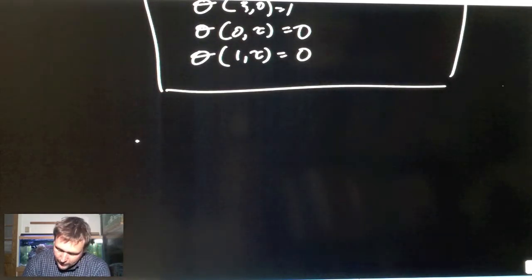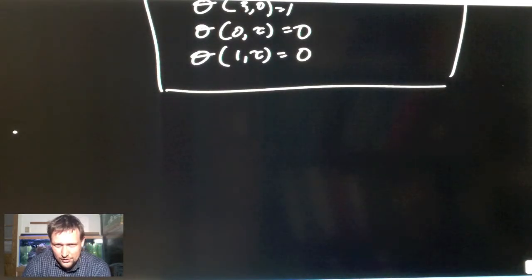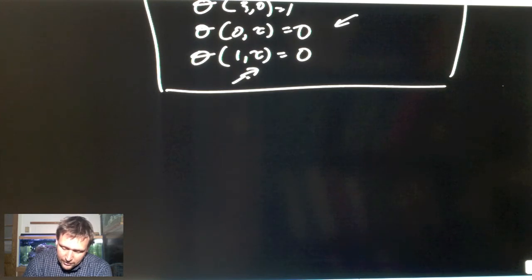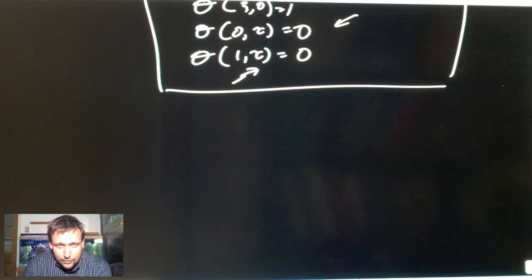The classical way to solve this problem, once you have the nice homogeneous boundary conditions—that means you have zero boundary condition for either the flux term or for the temperature term—is you can use what's called separation of variables.